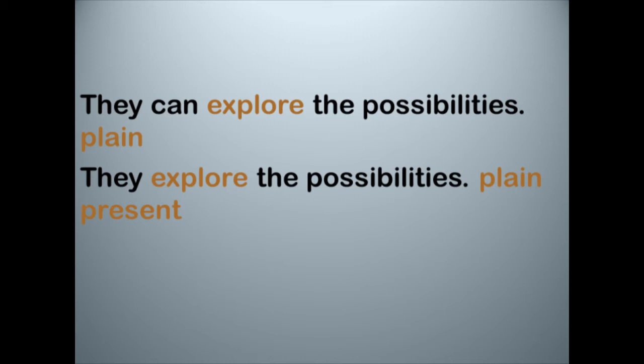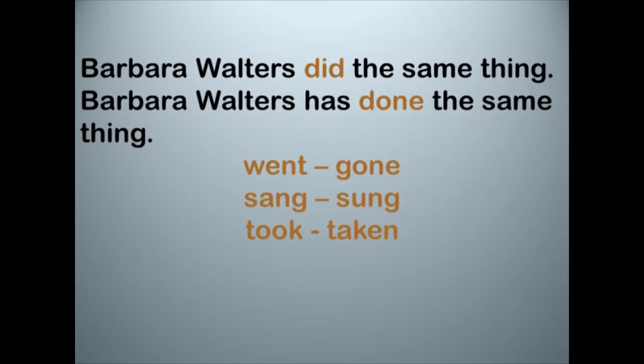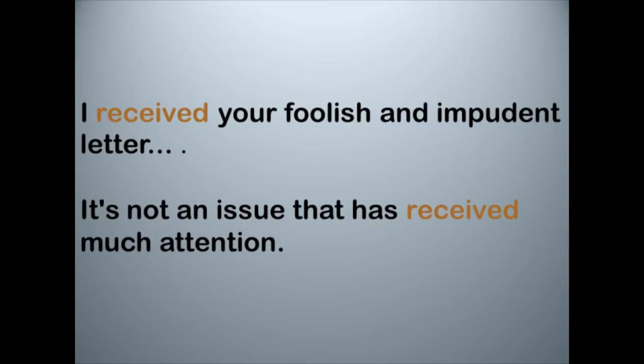Now let's think about the preterite form and the past participle. We do have a fair number of verbs where these have different shapes — for example, 'Barbara Walters did the same thing' versus 'Barbara Walters has done the same thing.' Did and done are different shapes. Similarly: went/gone, sang/sung, took/taken. But we have many more verbs where the preterite and the past participle have exactly the same shape — the regular verbs. For example: 'I received your letter' (preterite) and 'It's not an issue that has received much attention' (past participle) — received and received look the same. They have the same shape.